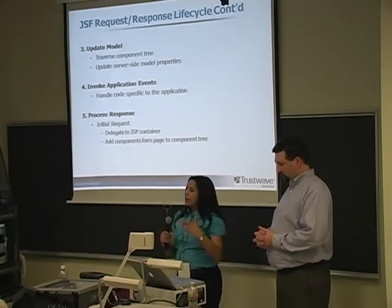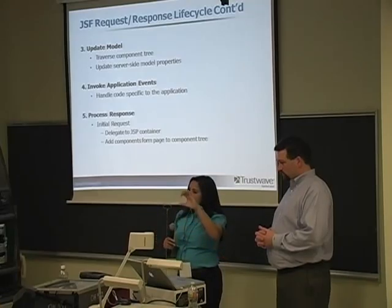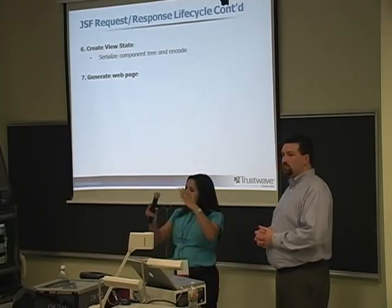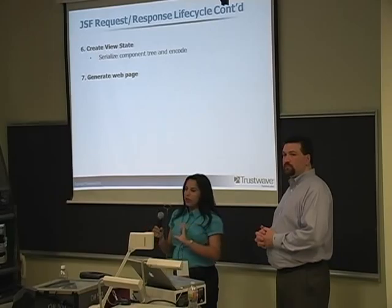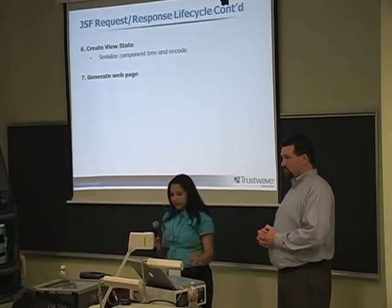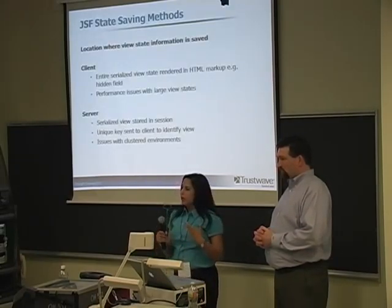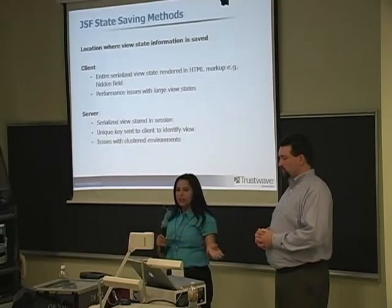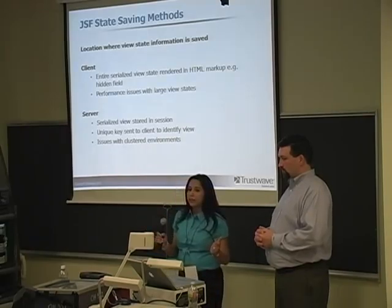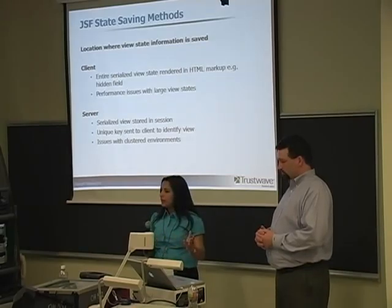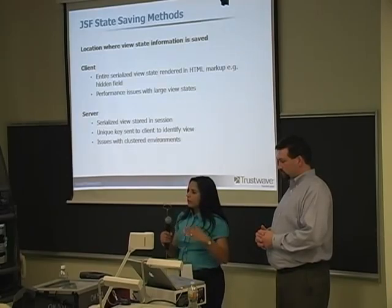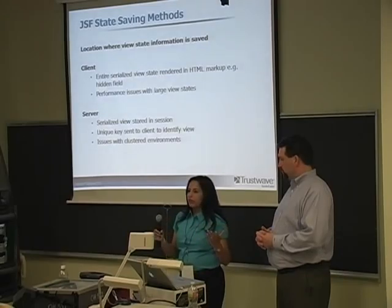If it was an initial request with no view state, you go to the JSP container and add the components from the page to the tree, creating an initial tree. In the next step you're ready to create the view state — you serialize the component tree and generate the web page. The specification doesn't define where the view state must be saved; it can be on the client or the server. Most popularly it's saved on the client in a hidden field called something like '_viewstate', though large view states can cause performance issues.